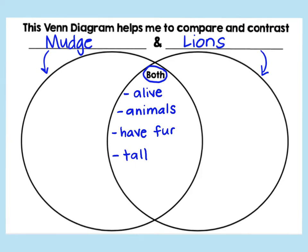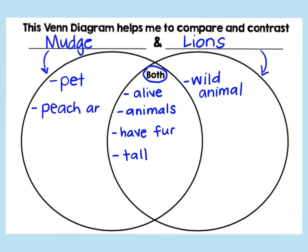Now let's look at Mudge's side. He is a pet. Is a lion a pet? Nope — it is a wild animal. It doesn't have an owner or a house; it lives in the wild. Thinking about their fur, the color of Mudge's fur is like a peach and brown color. So Mudge has peach and brown fur.